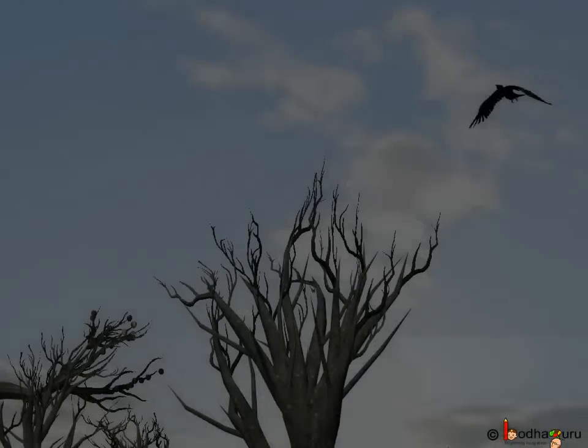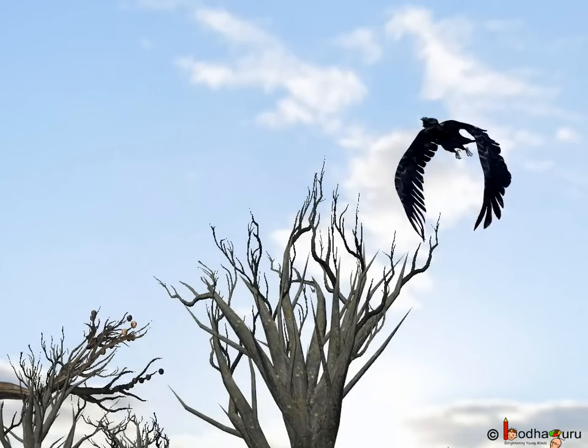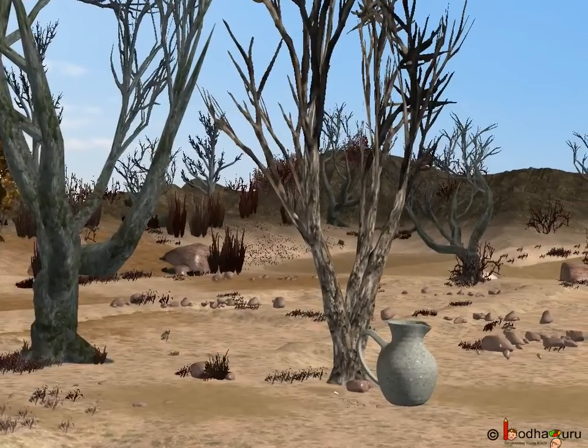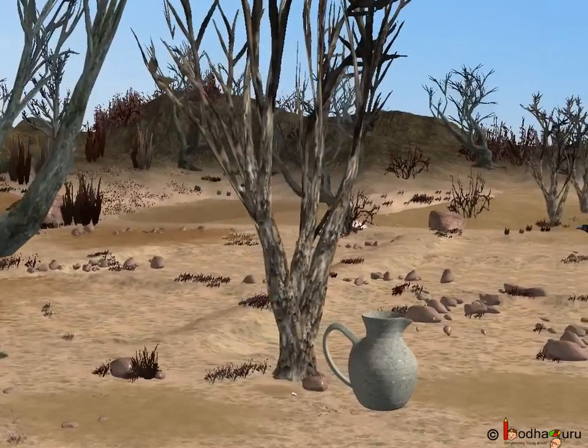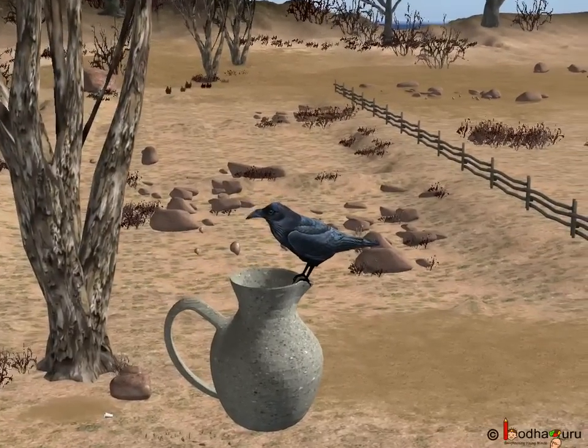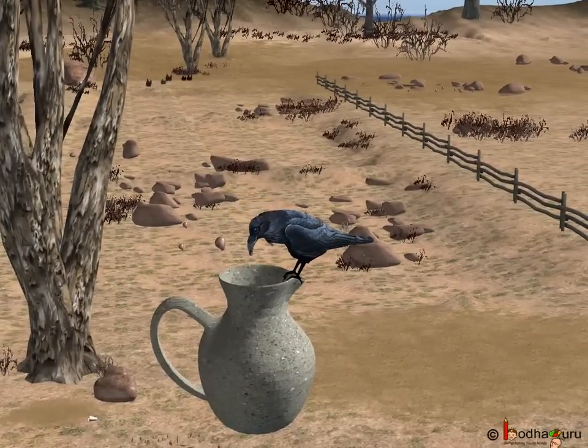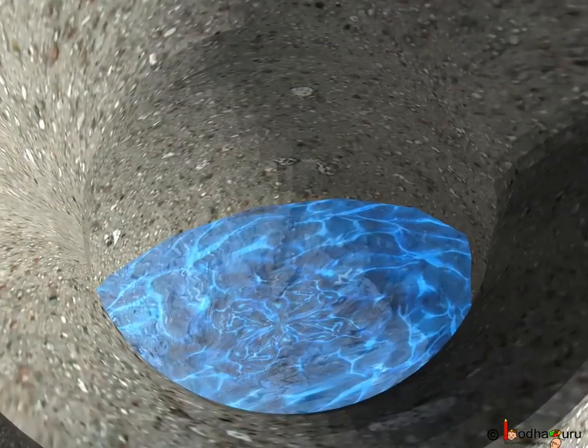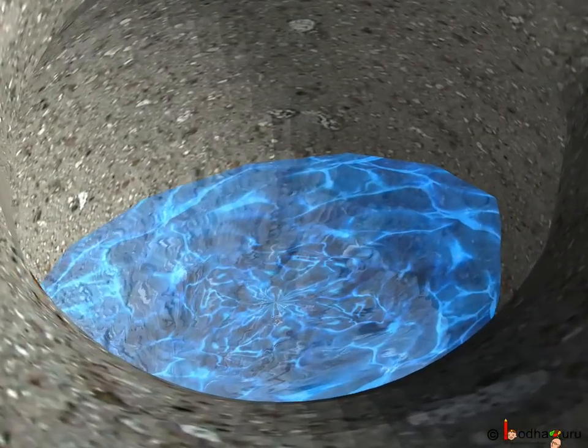Once upon a time on a hot day a crow was very thirsty. He couldn't find water anywhere. Suddenly it saw an earthen pot. It sat on the edge of the pot and saw that very little water was there at the bottom of the pot.